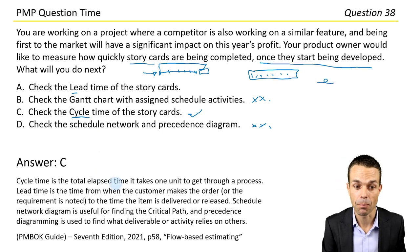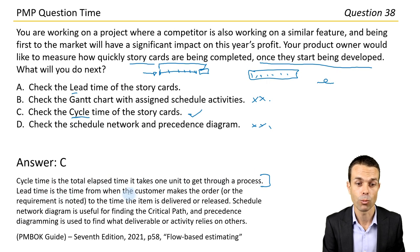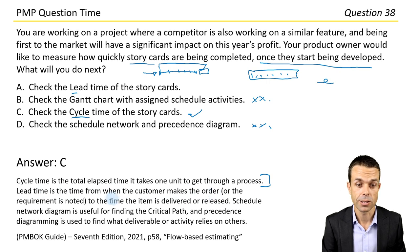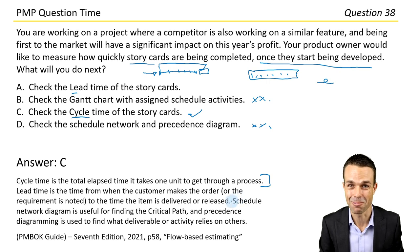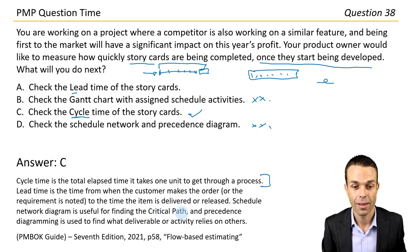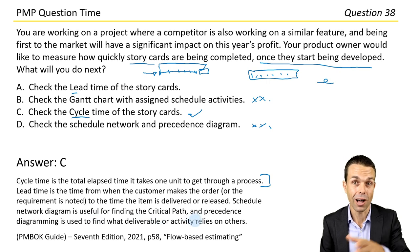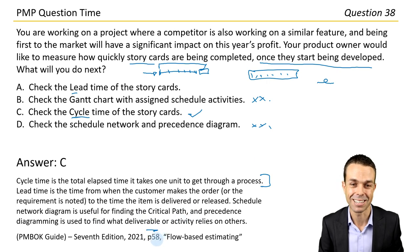Our answer is C — cycle time. Cycle time is the total elapsed time it takes one unit to get through a process. Lead time is the time from when the customer makes the order or the requirement is noted to the time that the item is delivered or released. Schedule network diagram is useful for finding the critical path, and precedence diagramming is used to find what deliverable or activity relies on other activities. Page 58 under flow-based estimating in the PMBOK Guide 7th edition.